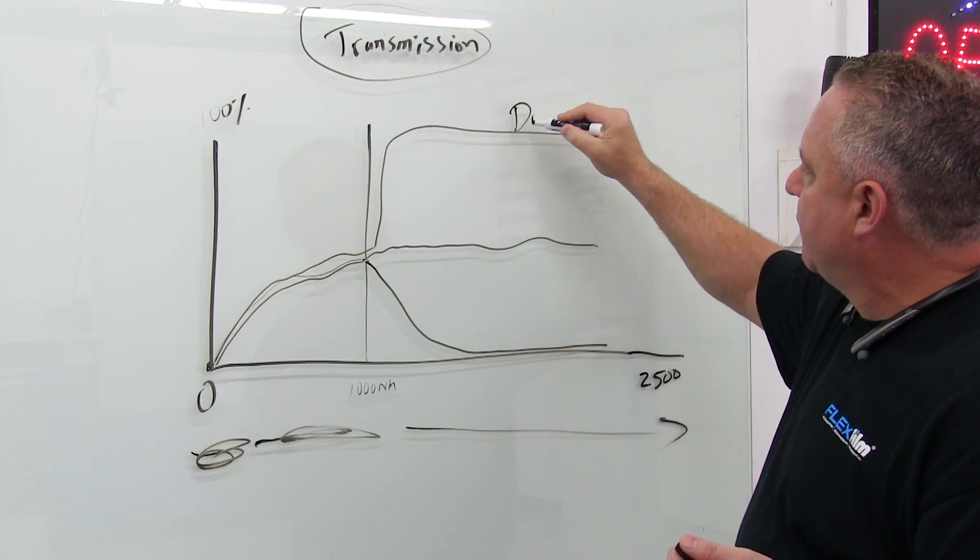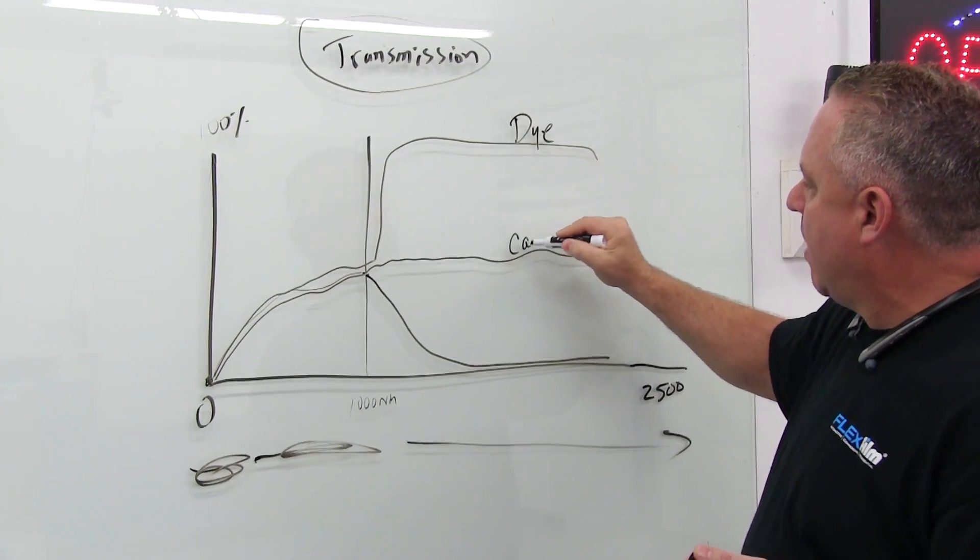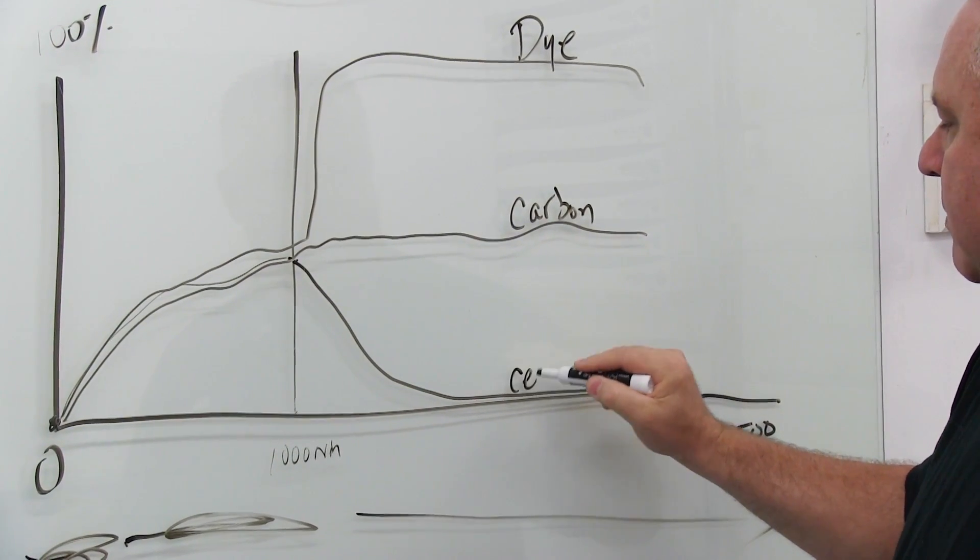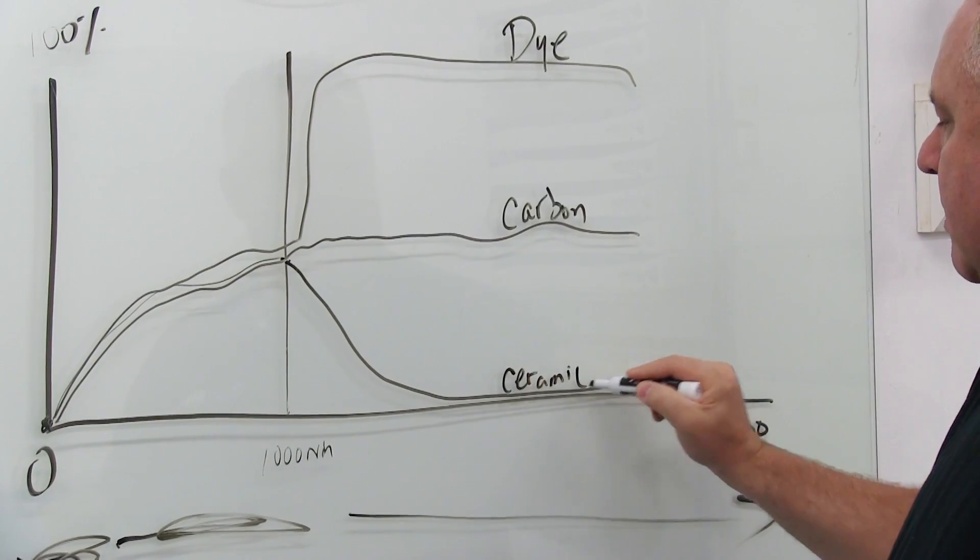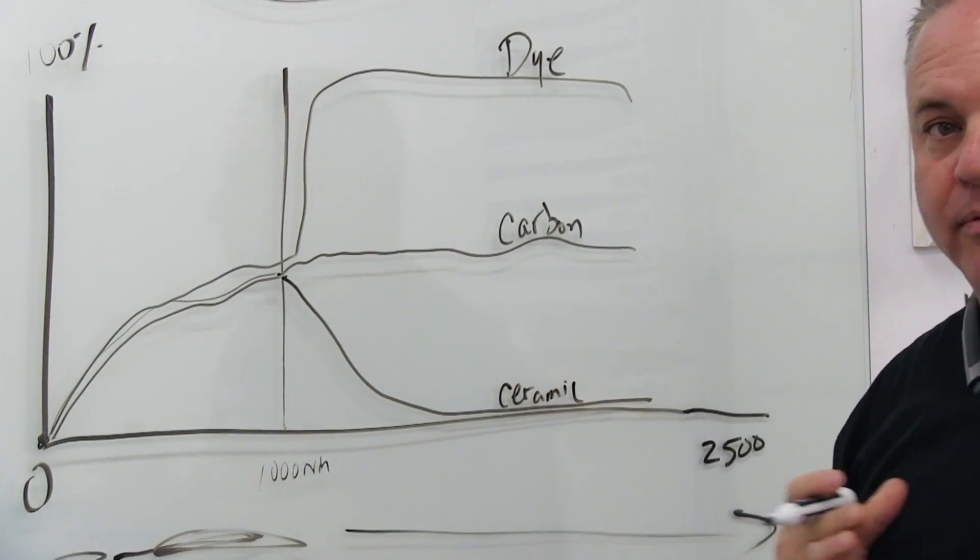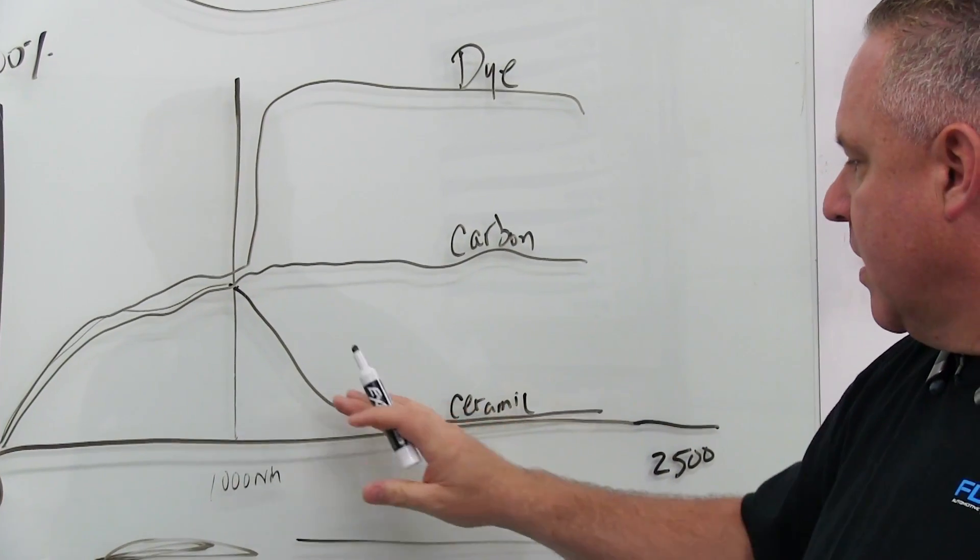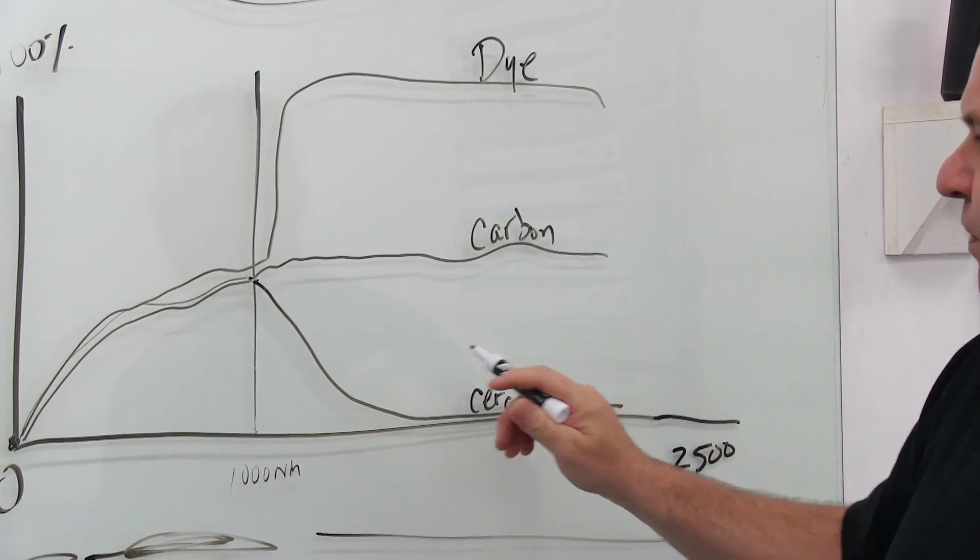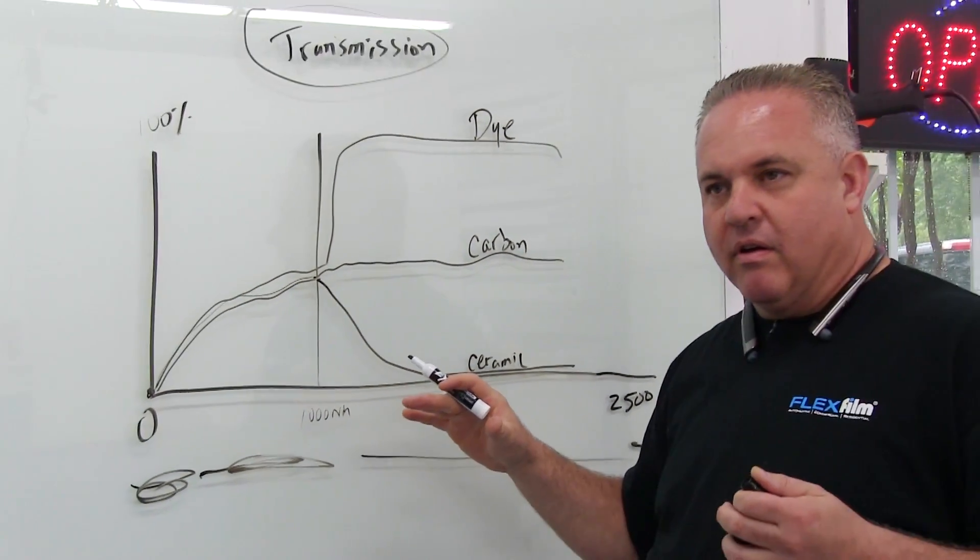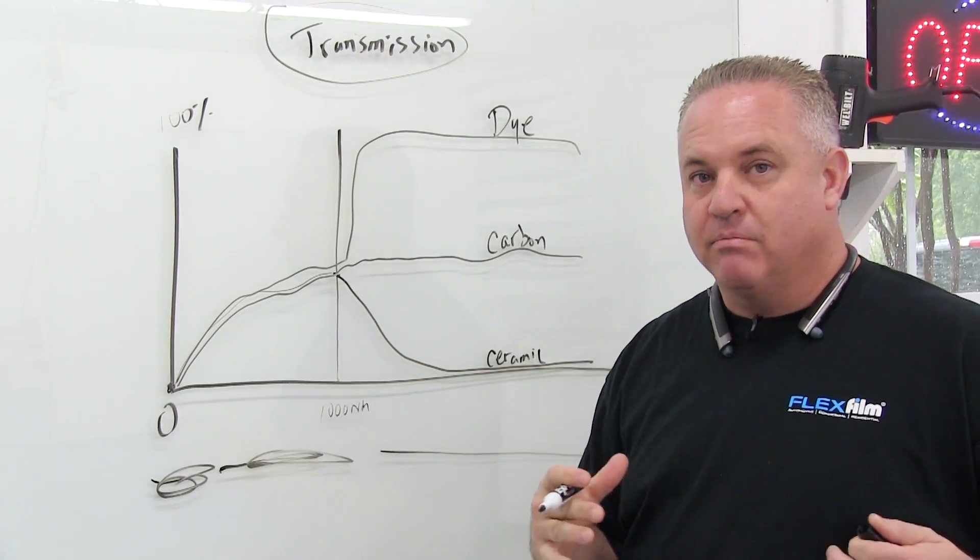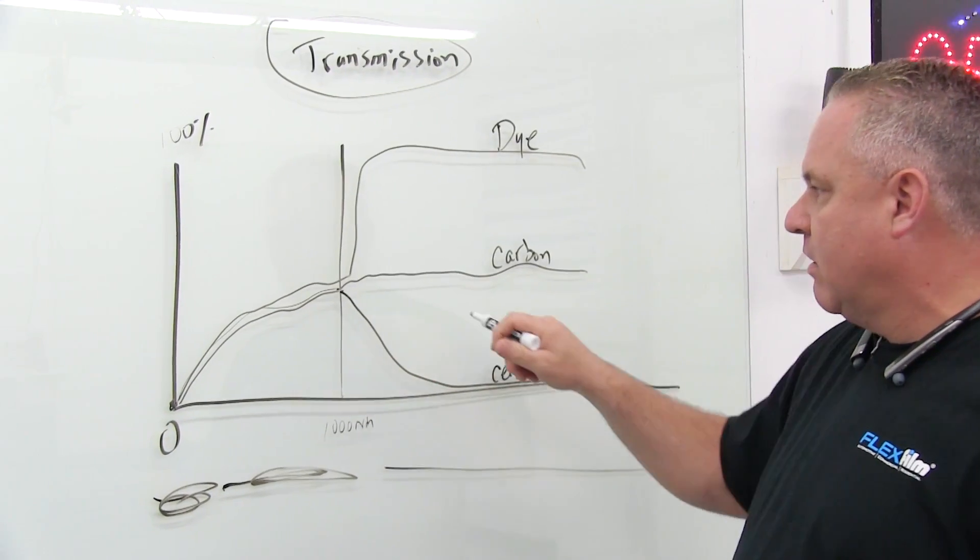This is typically what a dyed film will do. This is what a carbon film would do. And this is what a ceramic would do. And basically I'm basing this on films that FlexFilm sells. This is our dyed product, this is our carbon product, and this is our ceramic product. But as films block out more energy, that means they let less transmit. That means that everything's going to go down to zero here.